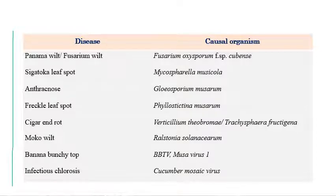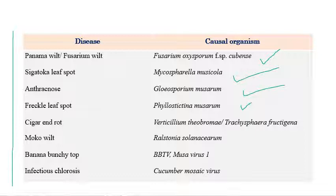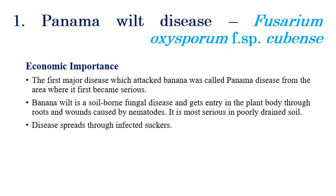The list of important diseases includes: Panama wilt, otherwise called Fusarium wilt, caused by Fusarium oxysporum f. sp. cubense; Sigatoka leaf spot caused by Mycosphaerella musicola; anthracnose caused by Gloeosporium musarum; freckle leaf spot caused by Phyllosticta musarum; cigar end rot; Verticillium theobromae; Trachysphaera fructigena; moko wilt caused by Ralstonia solanacearum; banana bunchy top virus or Musa virus 1; and infectious chlorosis caused by cucumber mosaic virus.